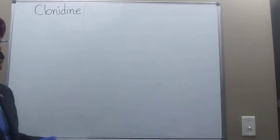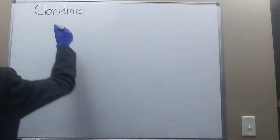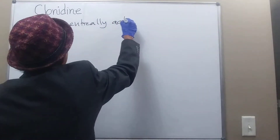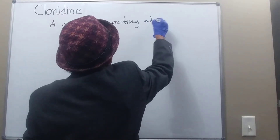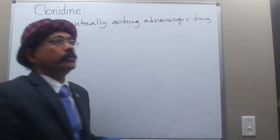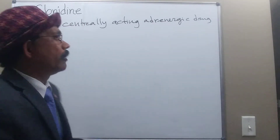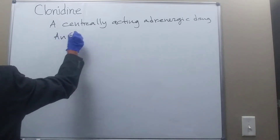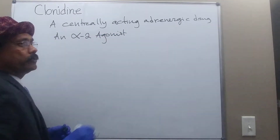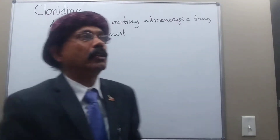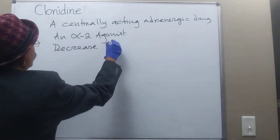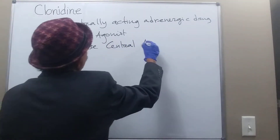Clonidine is a centrally acting adrenergic drug. It is an alpha-2 agonist, and it decreases the central adrenergic outflow.